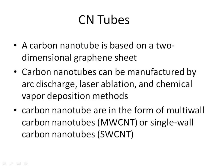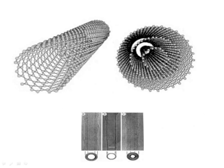Carbon nanotubes (CNTs). A carbon nanotube is based on a two-dimensional graphene sheet. Carbon nanotubes can be manufactured by arc discharge, laser ablation, and chemical vapor deposition methods. Carbon nanotubes are in the form of multi-wall carbon nanotubes (MWCNT) or single-wall carbon nanotubes (SWCNT). The figure illustrates a single-wall carbon nanotube (SWCNT) on the left side and multi-wall carbon nanotubes (MWCNT) on the right side.